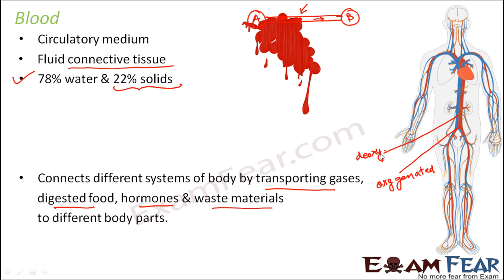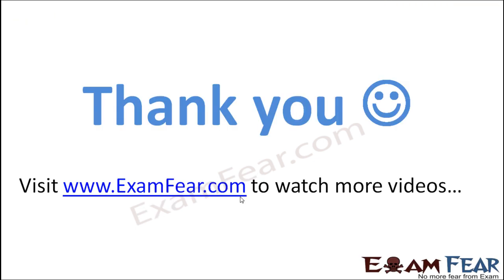Oxygenated blood carries good blood to different body parts, while deoxygenated blood, rich in carbon dioxide, has returned from those body parts. It is very important to keep these two separate because oxygen is needed by the cells while carbon dioxide must be expelled. These flow in distinct vessels — specific vessels carry oxygenated blood, and separate specific vessels carry deoxygenated blood, which will be covered in more detail ahead.